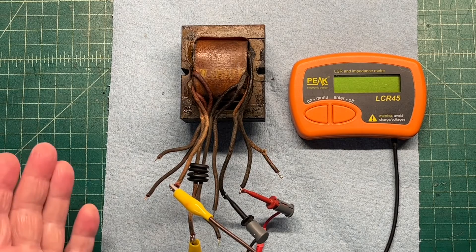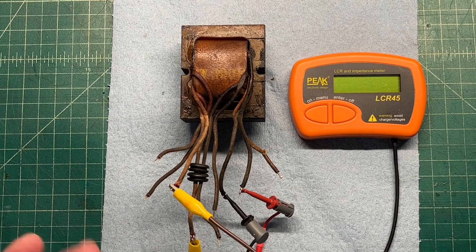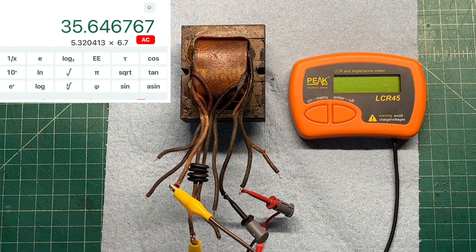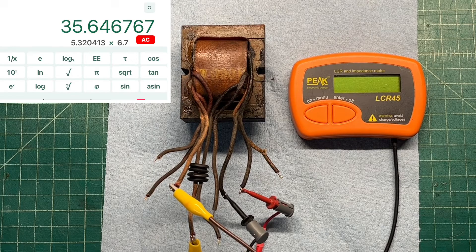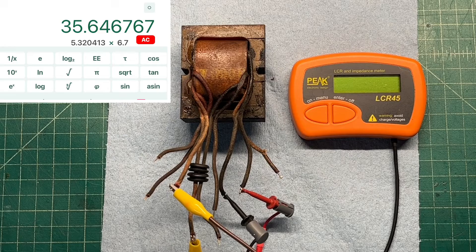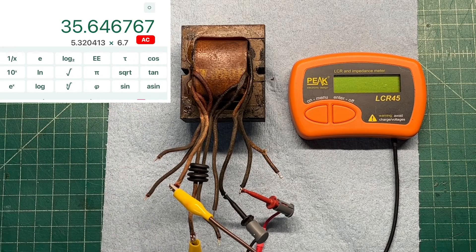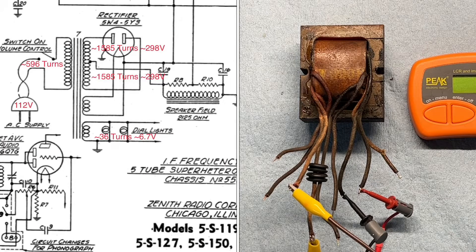We can take that same number and extrapolate everything for the 6.3. You can see I can take the turns ratio of the 5.3 volts plugged into the calculator here. We'll use an overhead of around 6.7 volts knowing there's going to be a voltage drop. And you can see that comes back to about 36 turns.